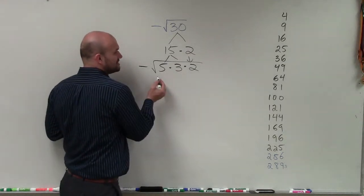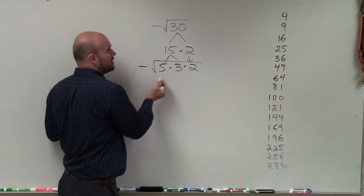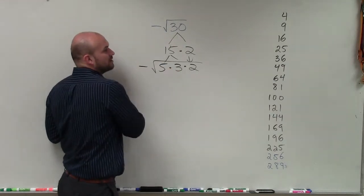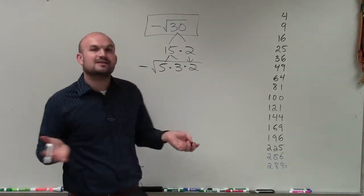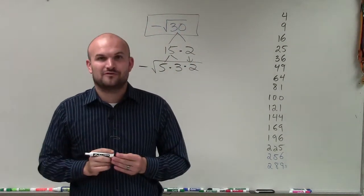So therefore, this is your simplified version. We cannot break down negative square root of 30 any further. And it really doesn't matter if it's negative or positive, but it cannot be simplified any further. Thanks.